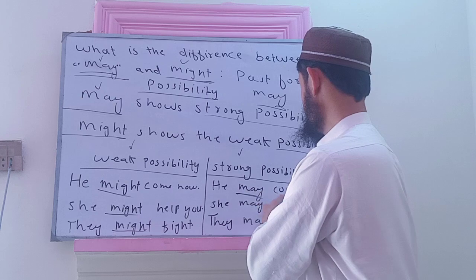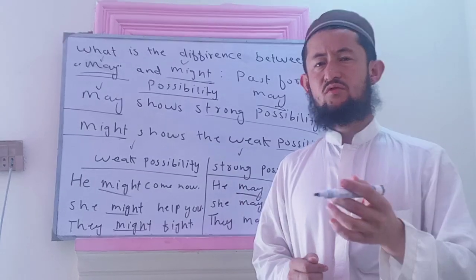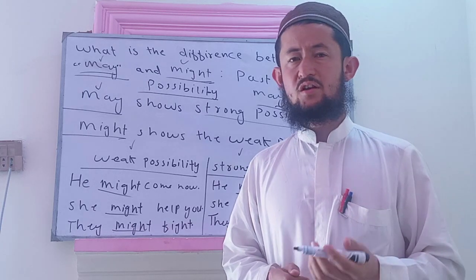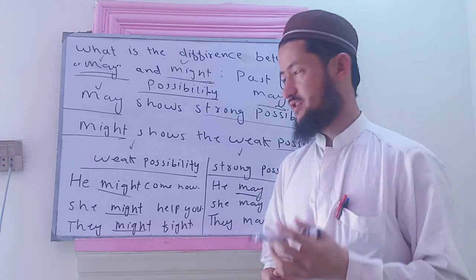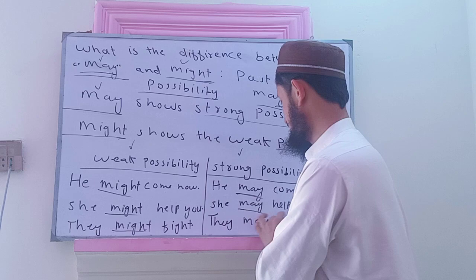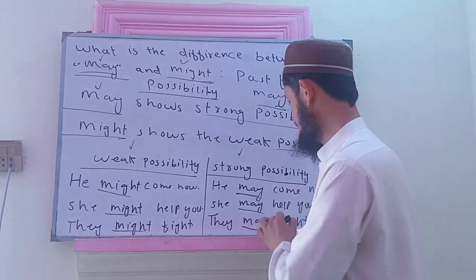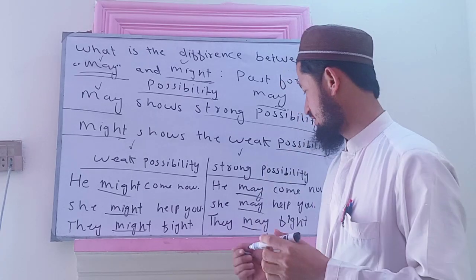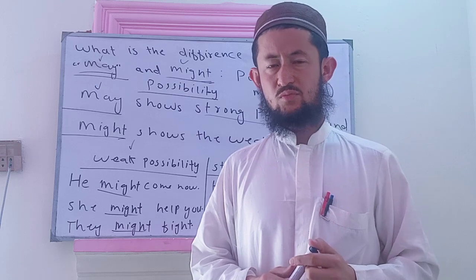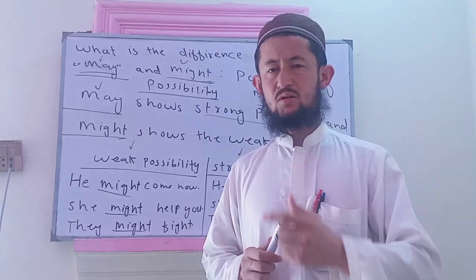May shows strong possibility. 'He may come now' — shayad wo aa jaye, up to 50% possibility. 'She may help you' — shayad wo aapki help kare, yahan help karne ke imkan strong hain. 'They may fight' — strong possibility. May shows strong possibility and might shows weak possibility.